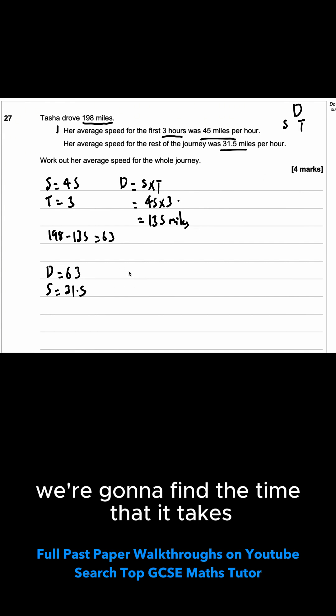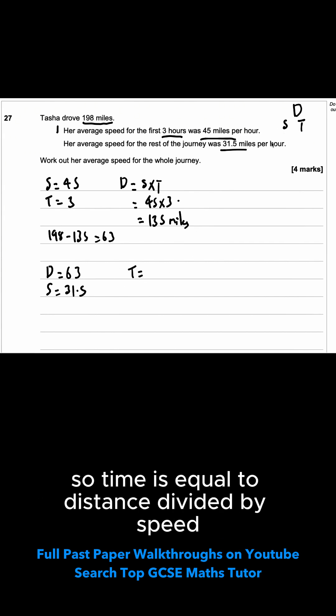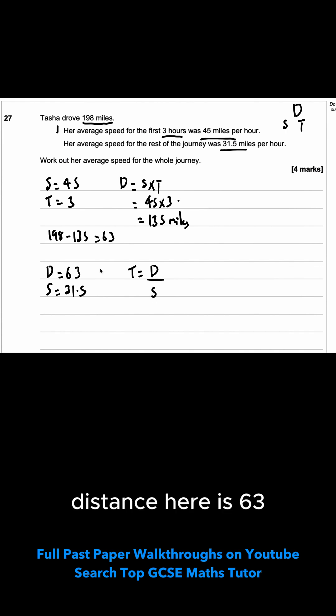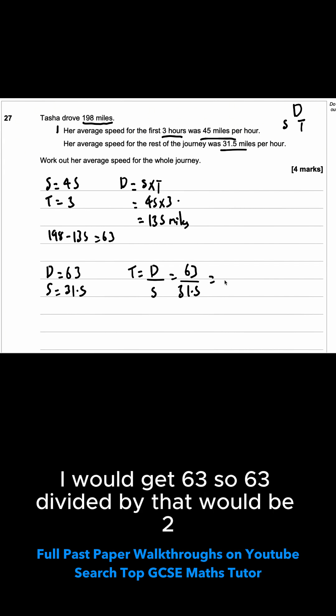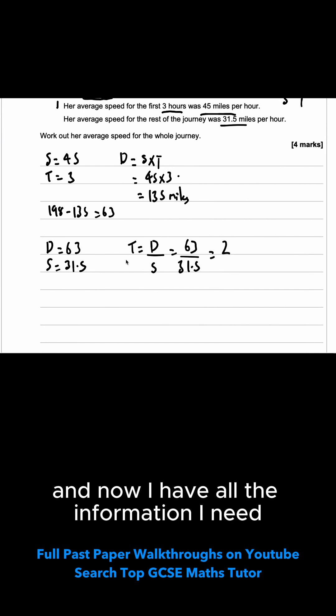We're going to find the time that it takes. So time is equal to distance divided by speed. Distance here is 63. 31.5 is the speed. I can see if I double this I would get 63. So 63 divided by that would be 2. And now I have all the information I need.